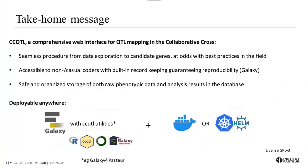To summarize, what we've set up is a comprehensive web interface for QTL mapping in the collaborative cross. It features a seamless procedure to go from data exploration to candidate gene, making best practices in the field accessible to non-specialists. It satisfies the absolute requirement for record tracking by using Galaxy's built-in reproducibility, and the database structure permits the safe and organized storage of both raw phenotypic data and analysis results. Last but not least, CCQTL can be deployed anywhere — it simply requires a Galaxy instance for the analytic part, with the CCQTL utilities installed, and the interface and database can be deployed locally or using a Kubernetes cluster.